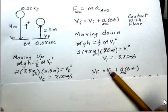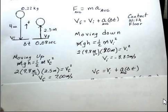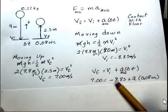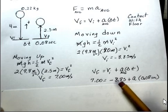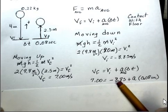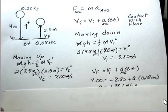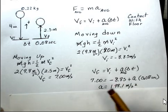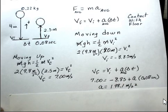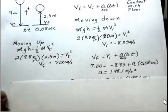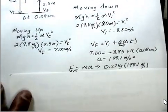V final equals V initial plus AT. And we now have the numbers to insert into there. Again, being careful to remember that at the start of the collision with the floor, the velocity was a negative number. So I put that in there. Add that 8.85 to both sides. Divide by 0.08. I came up with 198.1 meters per second squared. Again, recommend that you pull out your calculator, pause the video, and check that out.